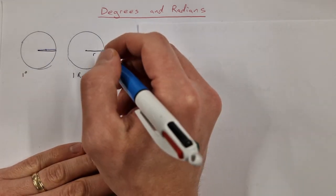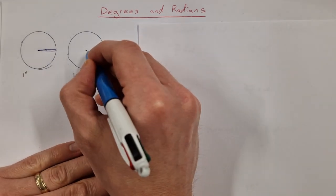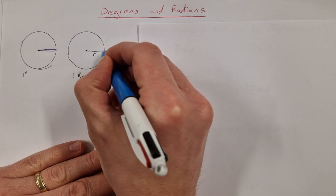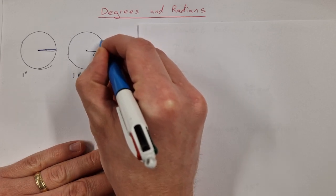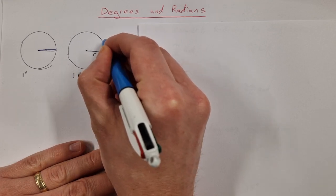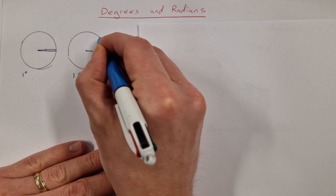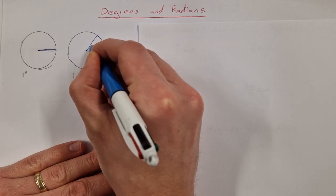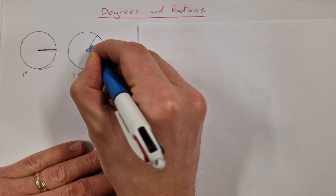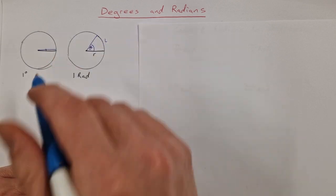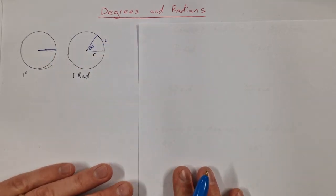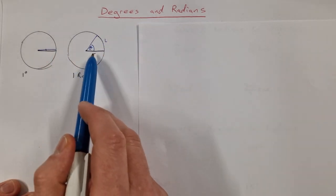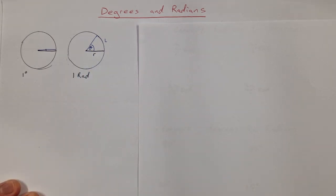A radian is quite a bit bigger. A radian is defined as the angle when the radius is equal to the arc length L. When the two of them are the same you get an angle around about that size there, which is a much bigger angle than one degree, and much fewer of them will fit in a full circle.